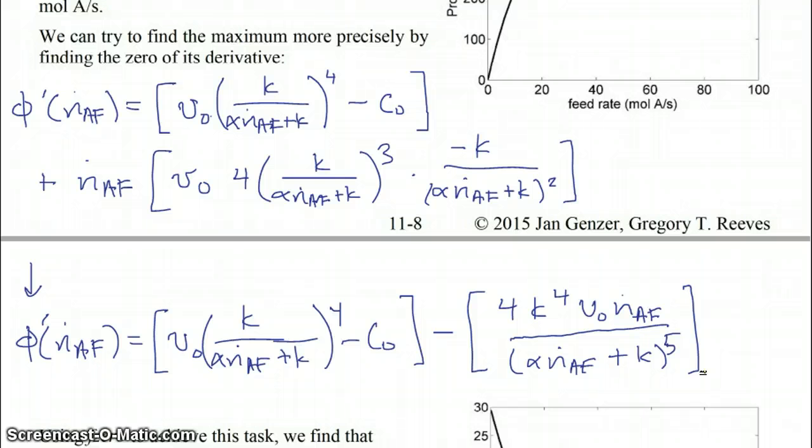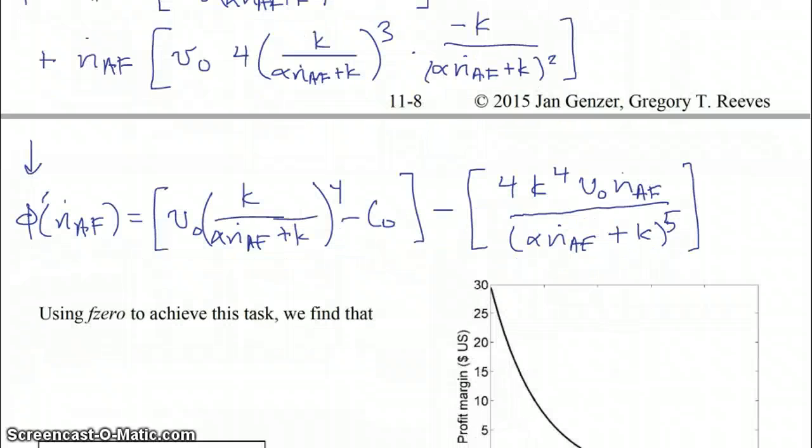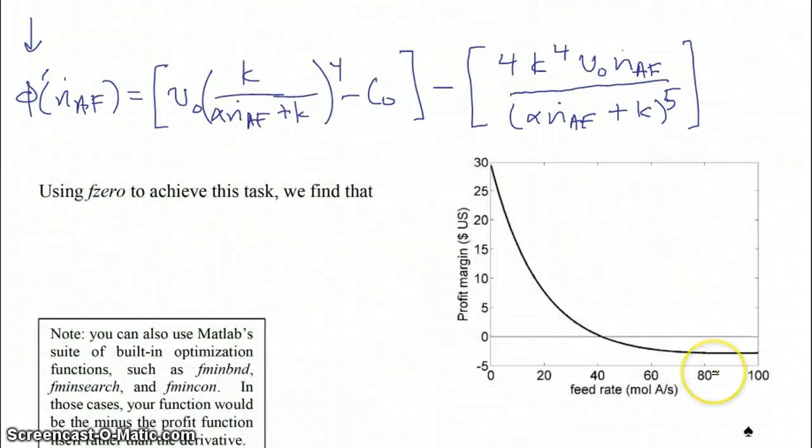Well, at any rate, this is what our derivative will look like, and so all we have to do is make a function that F0 can call upon, which has this phi prime in it. So using F0 to achieve this task, we find that the derivative crosses 0 right about here, where exactly where the maximum was in phi, and we find that N dot A feed optimal is equal to 41.6 moles per second.